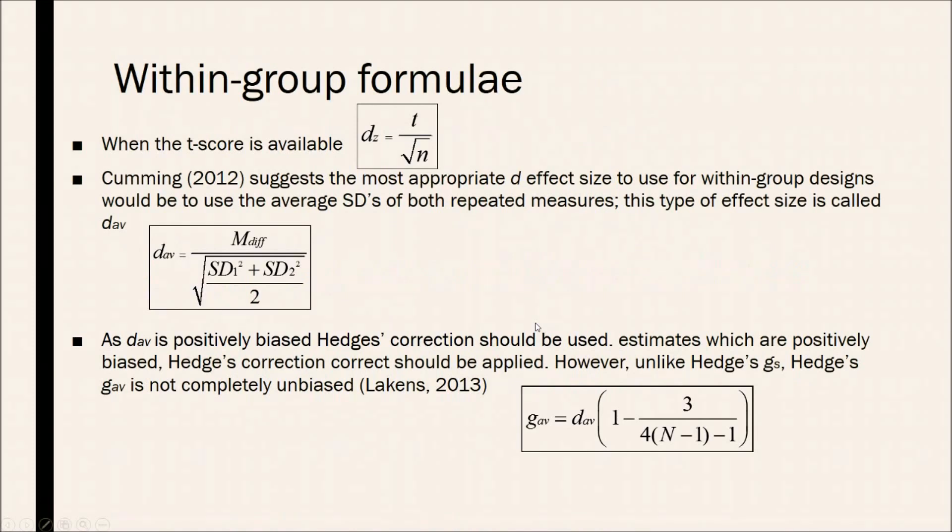So, going through some within group D family formulas. The first one is the standard DZ formula, and it's really not recommended, but it's there just to show you that it exists. Cumming in 2012 has suggested that the most appropriate effect size to use for within group designs would be to use the average standard deviation of both repeated measures, and this type of effect size is called DAV due to the fact that it is the average score. And that is the formula for DAV. It's pretty simple. The mean difference of the scores divided by the square root of the average standard deviations.